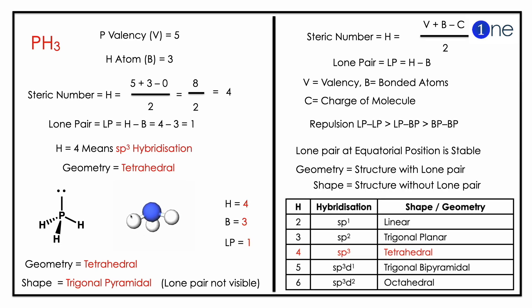To find the hybridization, you should know the steric number which is H = (V + B - C)/2. Here the phosphorus valence is 5, hydrogen atoms are 3, so the steric number will be 5 plus 3 divided by 2.